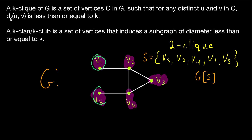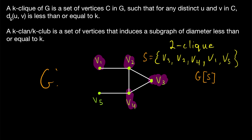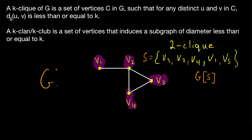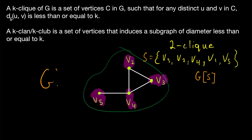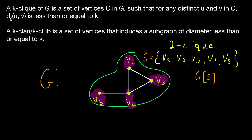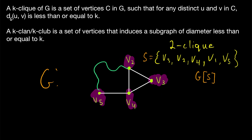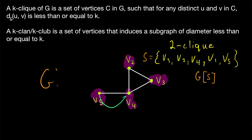So we can't include both V1 and V5 with these other vertices to get a two-clan. However, we can include one or the other. These four vertices make up a two-clan because the distance between any two of them in the induced subgraph is less than or equal to two. Similarly, if we include V5 but not V1, this is also a two-clan because we can travel between any pair of these vertices in at most two steps while remaining within the clan. We don't have to travel outside of the clan — for example, we can go from V5 to V4 to V2. So that's what a K-clan or K-club is.